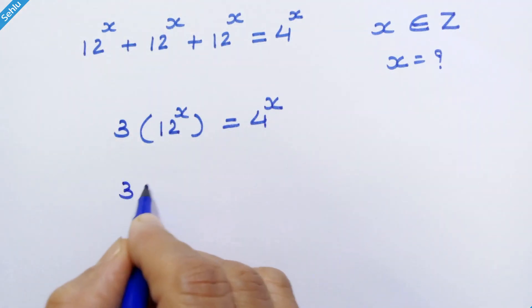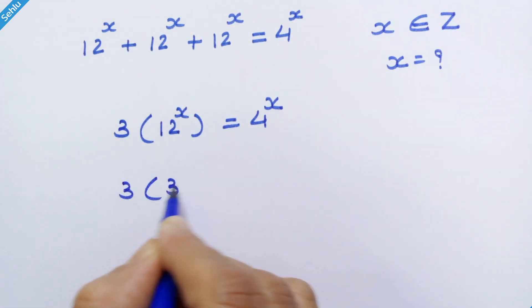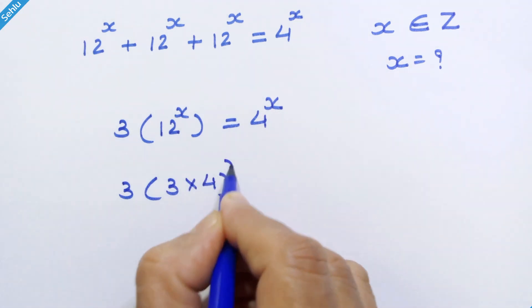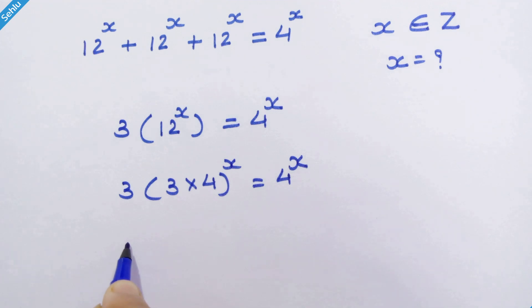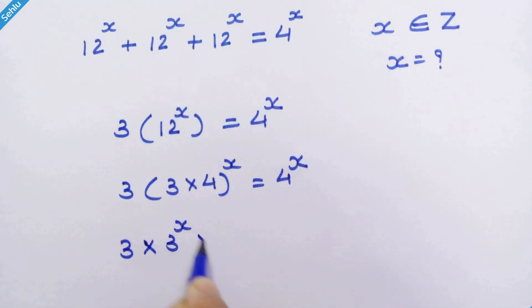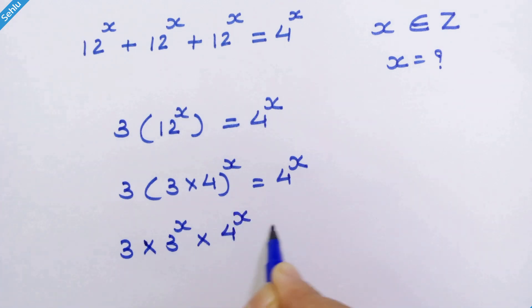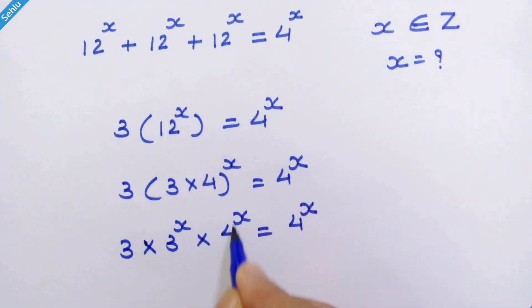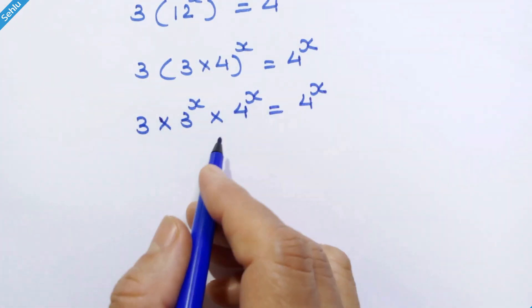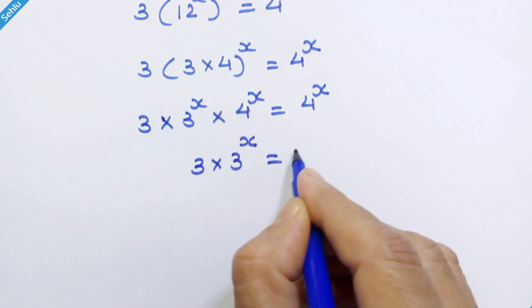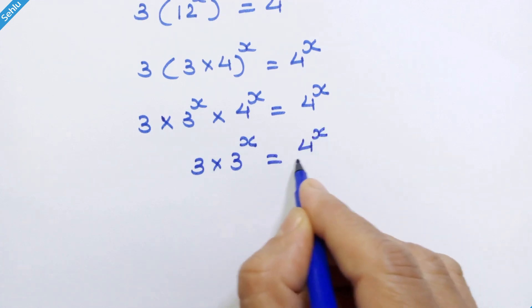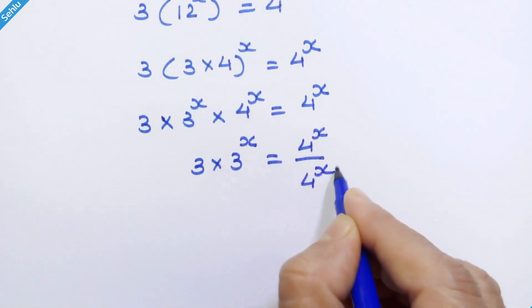So here we can write 3 into (3 into 4) whole raised to x is equal to 4 raised to x. We can also write this as 3 into 3 raised to x into 4 raised to x is equal to 4 raised to x. Let's move 4 raised to x to the right hand side. So we have 3 into 3 raised to x is equal to 4 raised to x upon 4 raised to x.